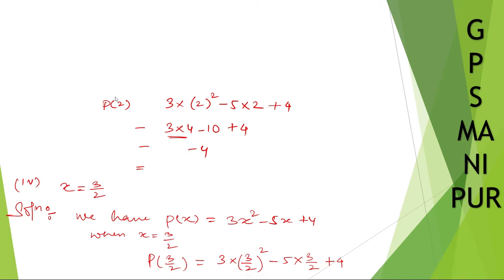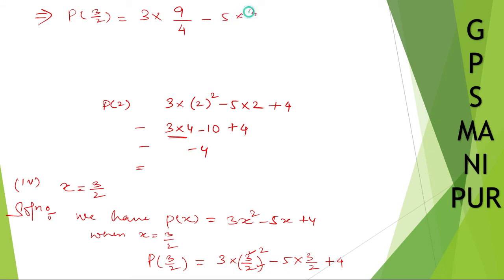Continuing — p(3/2) equals 3 into (3/2)². Here 3² is 9 and 2² is 4, so that gives 3 into 9/4, minus 5 into 3/2, plus 4.